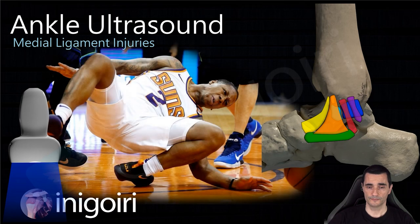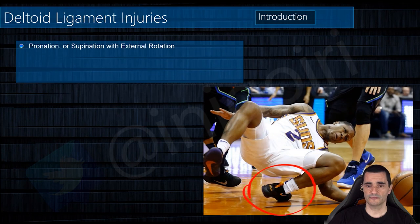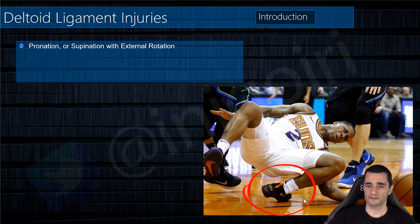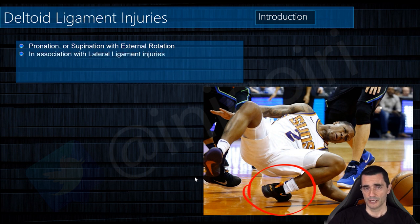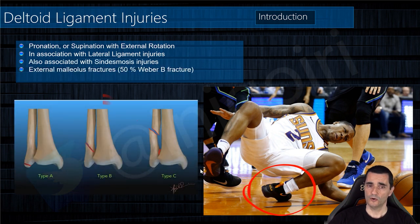First of all, a brief introduction. The mechanism of injury is usually supination with external rotation, as seen in the image, and in this mechanism the superficial layer is typically affected. With pronation, the deep layer will be affected. These are very rare as isolated injuries and usually come with other injuries, most frequently lateral ligament injuries, syndesmosis injuries, or external malleolus fractures.